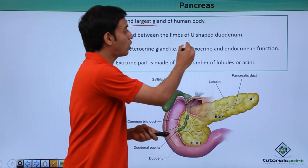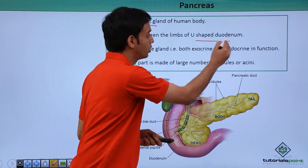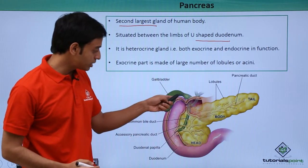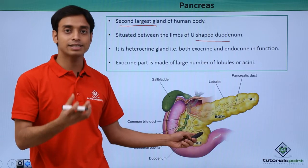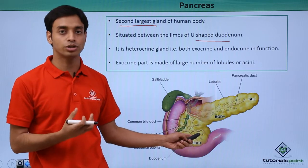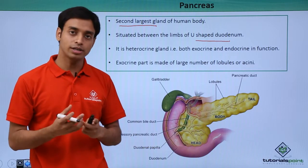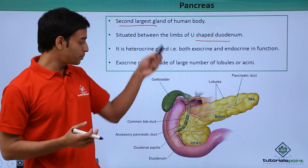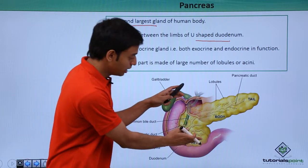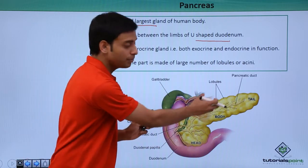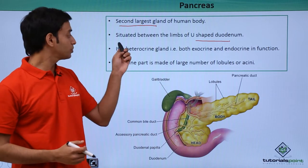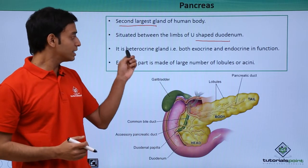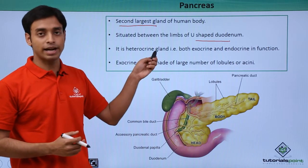The pancreas is situated between the limbs of the U-shaped duodenum. As you can see, this is the duodenum region — that is the starting portion of the small intestine. It is present between the two limbs of the duodenum.